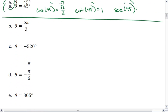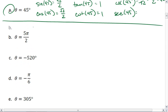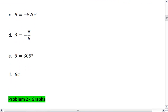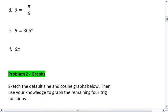We have 5 pi over 2, negative 520 degrees, negative pi over 6, 305 degrees, and 6 pi.